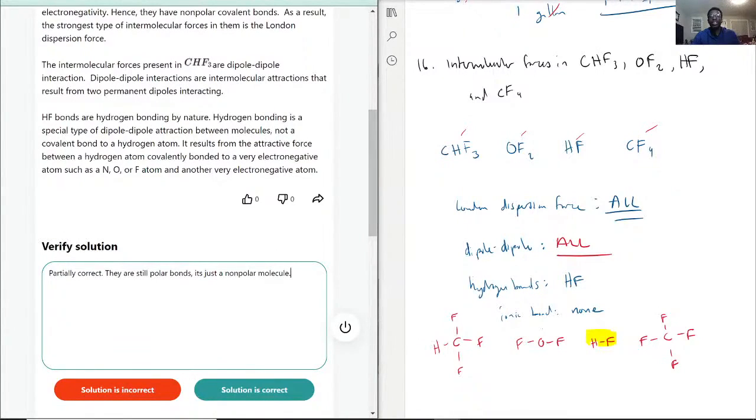It's just that each side has this polarity. It's not leaning towards one side like with CHF3. Yes, HF, hydrofluoric acid, is going to be the strongest type because of its hydrogen bond. With that, let's move on to the next question. Thank you.